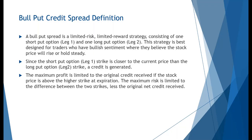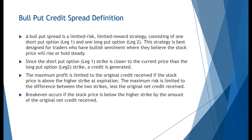Our maximum profit will be limited to the amount of credit we take in from these two different strikes. In order to achieve that maximum profit, we need the price of the stock to be above the higher strike price at expiration. Our maximum risk is limited to the difference between our two strike prices minus the credit we take in. Break even occurs if the stock price is below the higher strike price — the one that we sold — by the amount of the credit we receive.